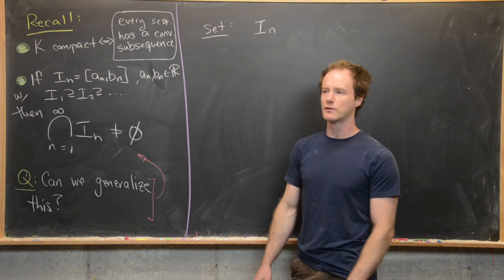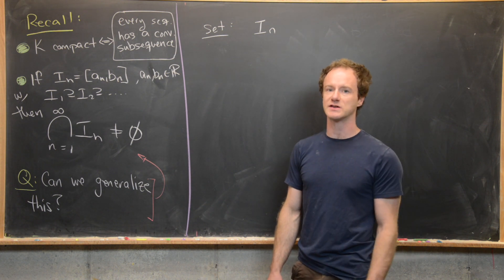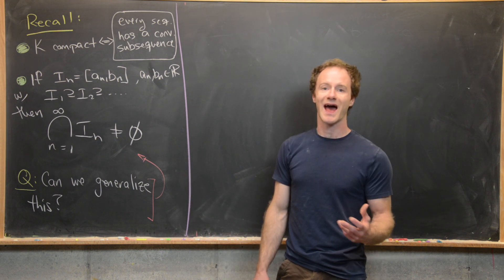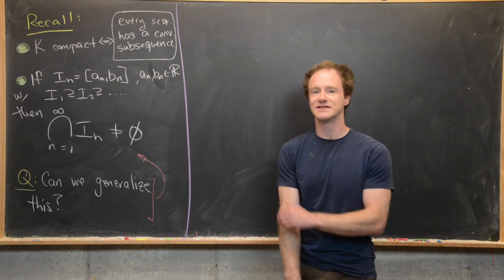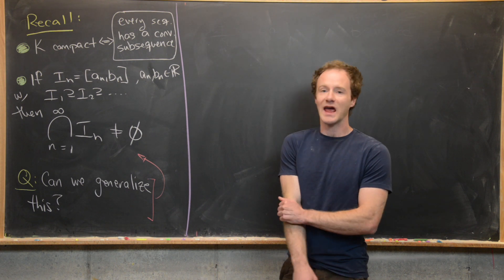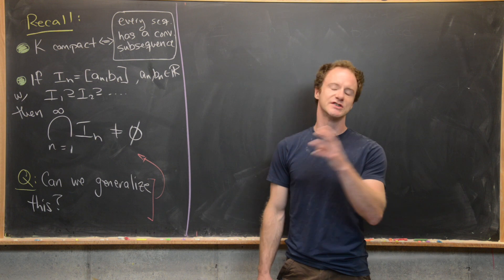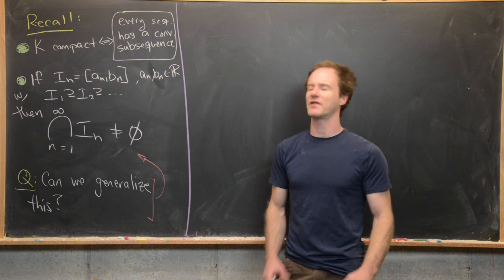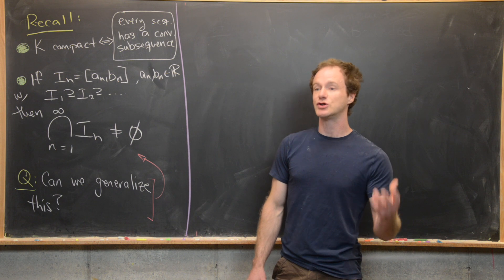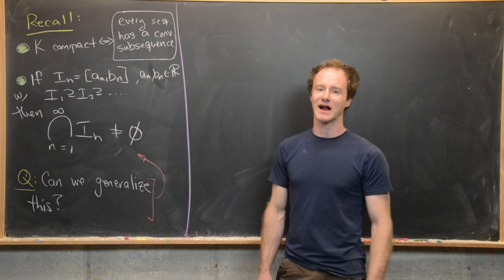We proved that earlier — that was a result of the axiom of completeness of the real numbers. So we want to ask: can we generalize this closed nested interval theorem? Maybe first, could we generalize it just to closed sets? We will find out that that's impossible, but maybe we could generalize it to closed and bounded sets — in other words, compact sets.